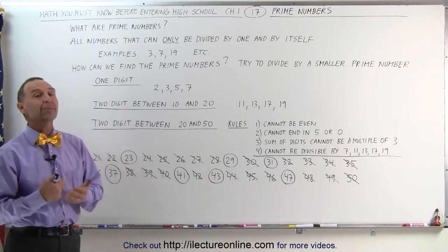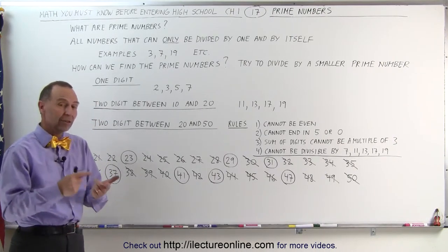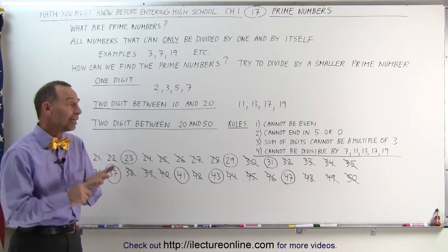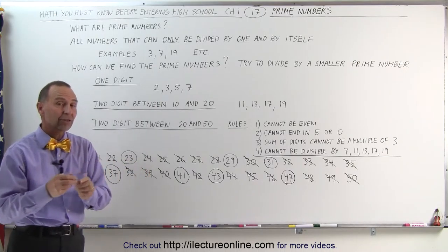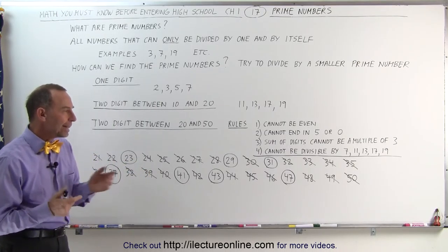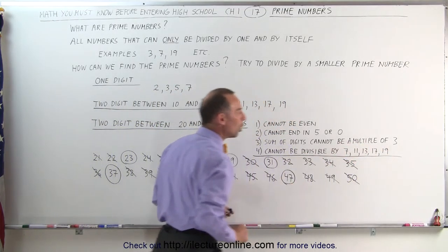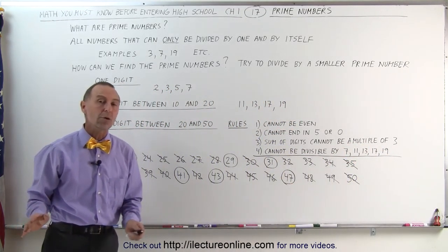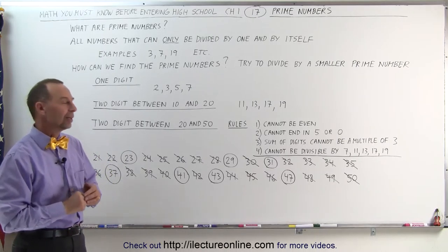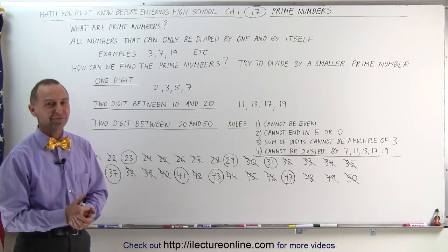So, those are the only prime numbers between the numbers 20 and 50. And that's kind of the way you do it for any prime number. You simply determine, does it end in a 0 or 5? Is it even? When you add the digits together, is it a multiple of 3? And then, a quick check, can you divide it by a smaller prime number that you know? And if all those answers are no, you're almost sure that you're dealing with a prime number. That's how it's done.